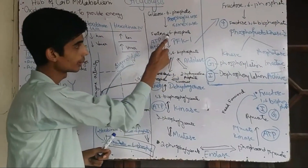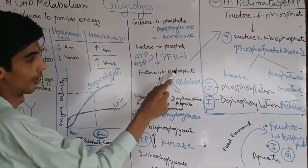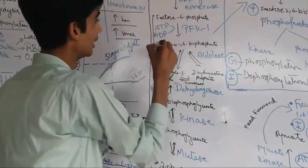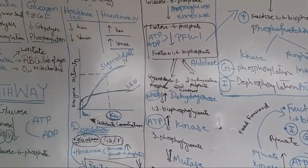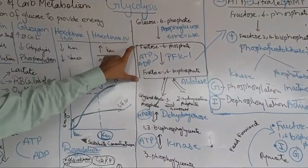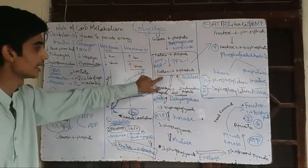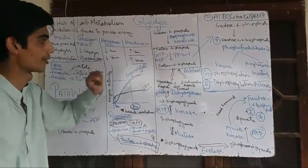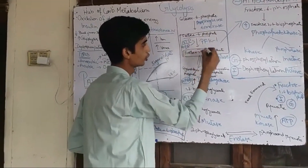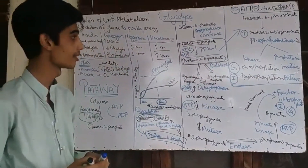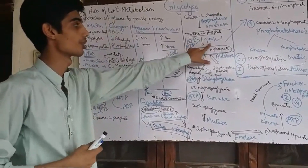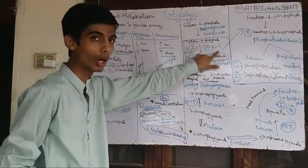The next step is fructose 6-phosphate being converted into fructose 1,6-bisphosphate. This is both the regulatory and rate-limiting step of glycolysis. Another ATP molecule is utilized here, and the enzyme is Phosphofructokinase 1 (PFK-1).